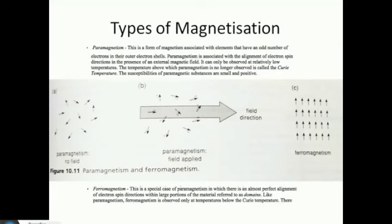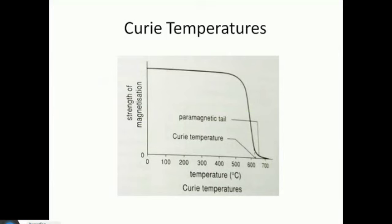For ferromagnetism — 'ferro' is for iron — this is usually found in rocks that have a lot of iron. There is a perfect alignment of electron spin directions within a large portion of the material, referred to as a domain. A large amount of electrons are lining up with the field direction, which is why you get a much higher and stronger anomaly. The Curie temperature is the temperature above which a rock loses its magnetism — it gets reset above this temperature. Strong magnetization persists up to around 500–600 degrees Celsius, then falls away as the rock becomes molten.